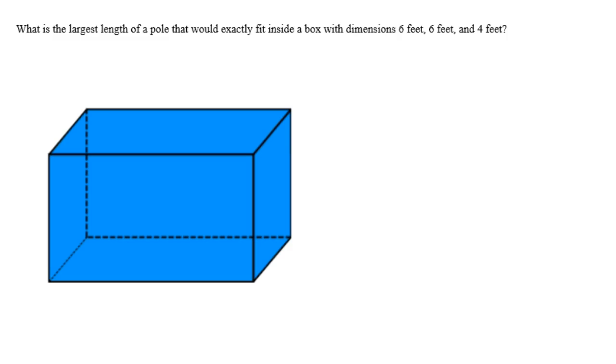Next up. So what's the largest length of a pole that would exactly fit inside a box with dimensions six feet, six feet, and four feet? Now, this isn't the greatest representation. Because my cuboid here, my square prism, this is shorter than this length. And it should be just the opposite. You should have a square that's a little bigger, should be wider and a little fatter. But that's all right. It's close enough.